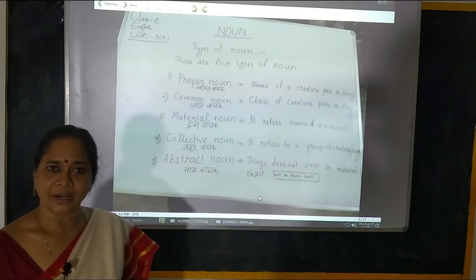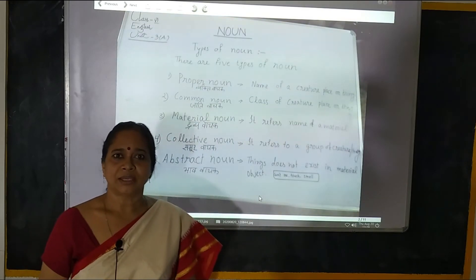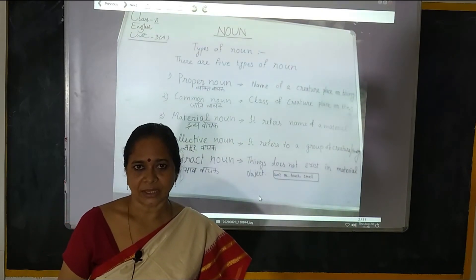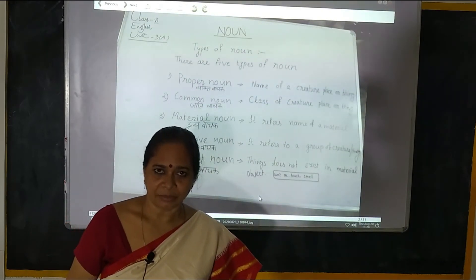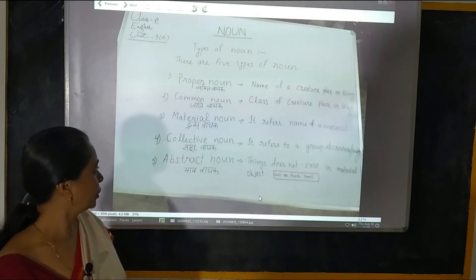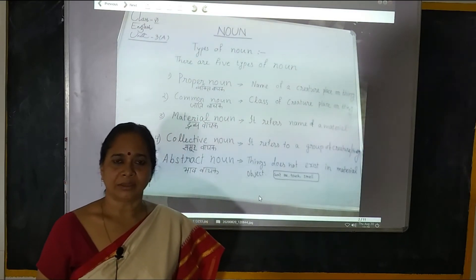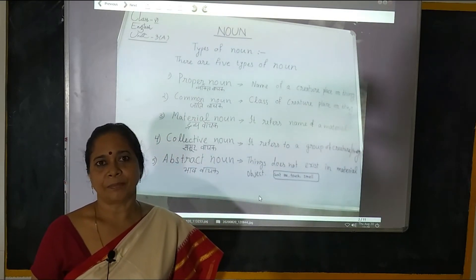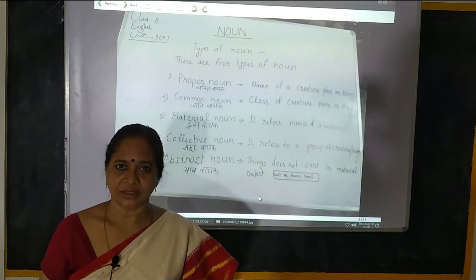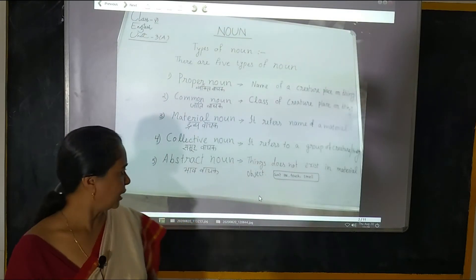Agla hai Material Noun. Material Noun — woh dravya padart ka bodh hota hai, jise naum bhi tola ja sakti hai. Iska example: Sona, Chandi, Doodh.